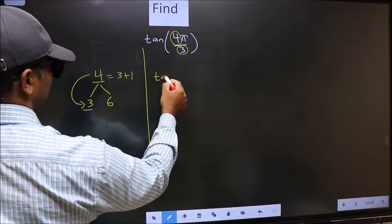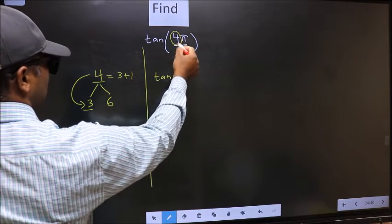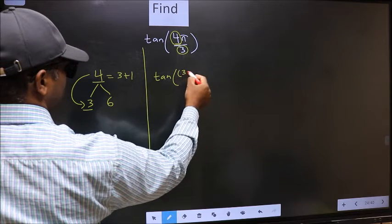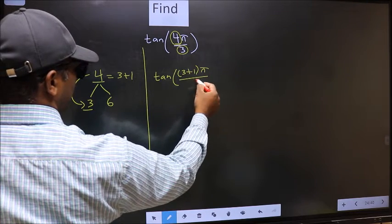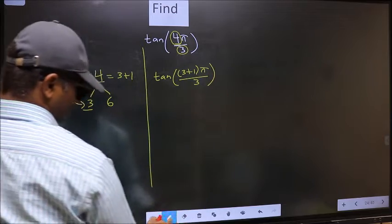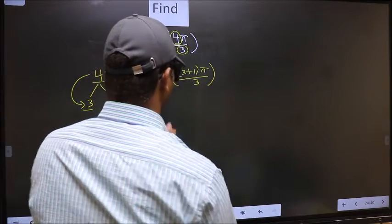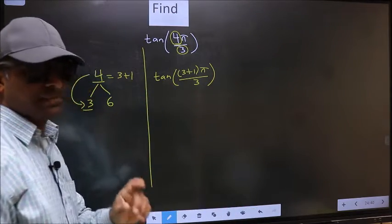So this will become tan. In place of 4, now you should write 3 plus 1, π by 3. This is your step 1.